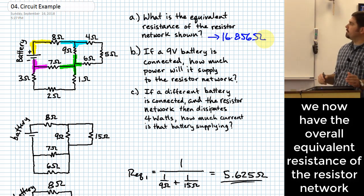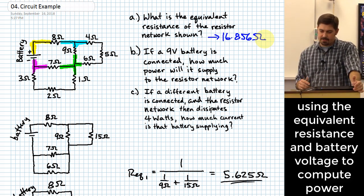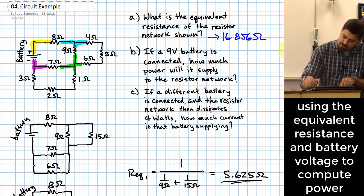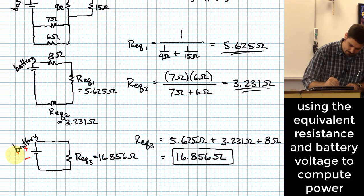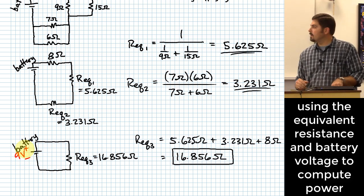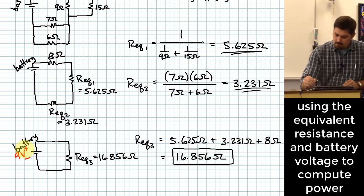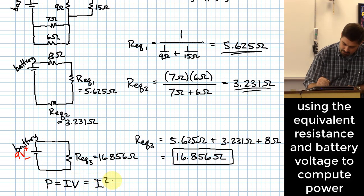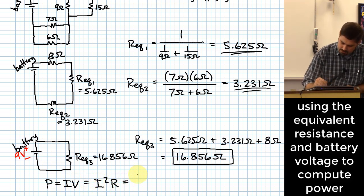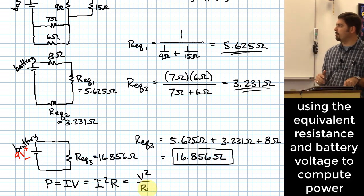All right, what about part B? If the nine volt battery is connected, how much power will it supply to the resistor network? So what we'll do is we'll go way down here and we'll say, what if this was nine volts? And you might remember we had a couple of equations that we used for power, right? We looked at these last time. Here's what they were. We had P equals IV. P was also equal to I squared R and P was also equal to V squared over R.